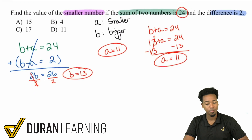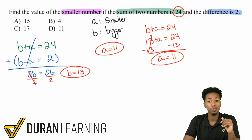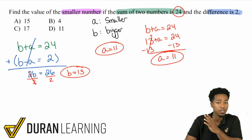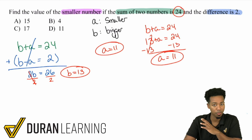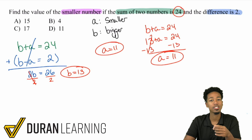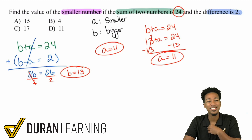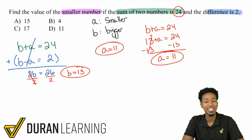Being able to set systems up correctly is more important than solving them — if you set them up the wrong way, you'll get the wrong solution no matter what. This is the first of many problem types for systems of equations. Watch the next videos, practice the worksheets, and practice the speed drills if you're in the course. I'm Anderson, your math coach — let's keep improving.